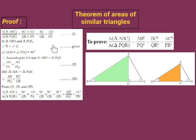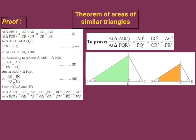Now, writing statement number 1: area of triangle ABC upon area of triangle PQR equals BC upon QR × AD upon PS. We need to replace AD upon PS. From statement 2, AD upon PS equals AB upon PQ. From statement 3, AB upon PQ equals BC upon QR. Since the first ratio equals the second and the second equals the third, we can replace AD upon PS with BC upon QR.